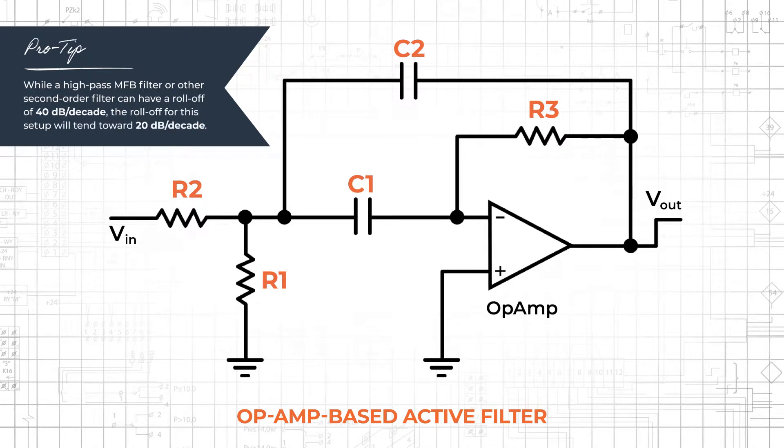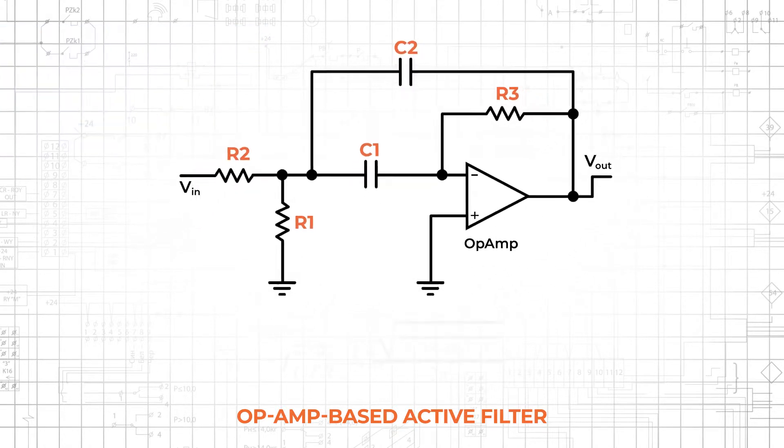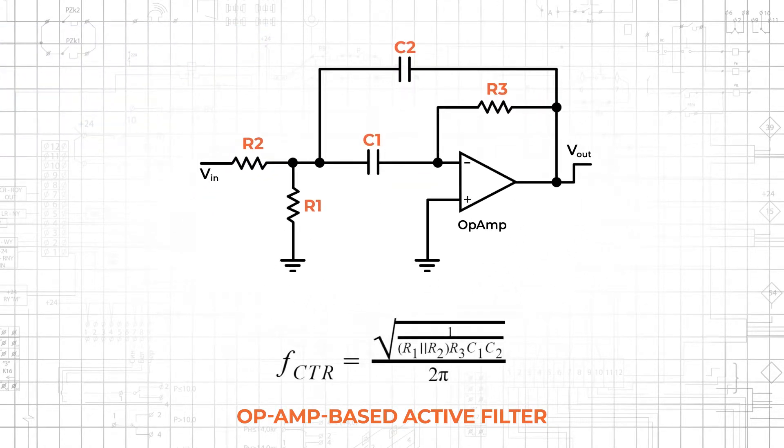While a high pass MFB filter or other second order filter can have a roll off of 40 dB per decade, the roll off here will tend towards 20 dB per decade as one pole handles the low frequency response and the other handles the high frequency response. The center frequency can be calculated as shown.